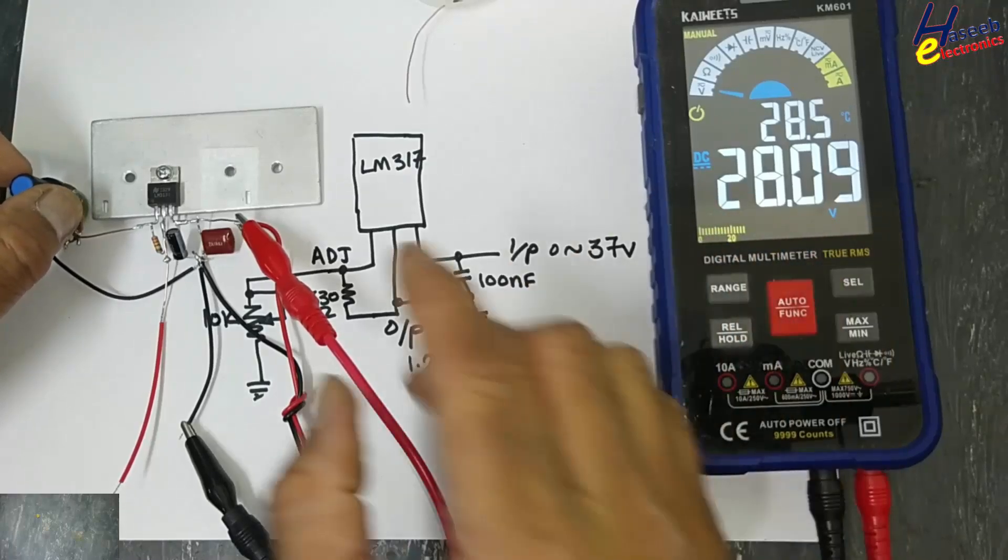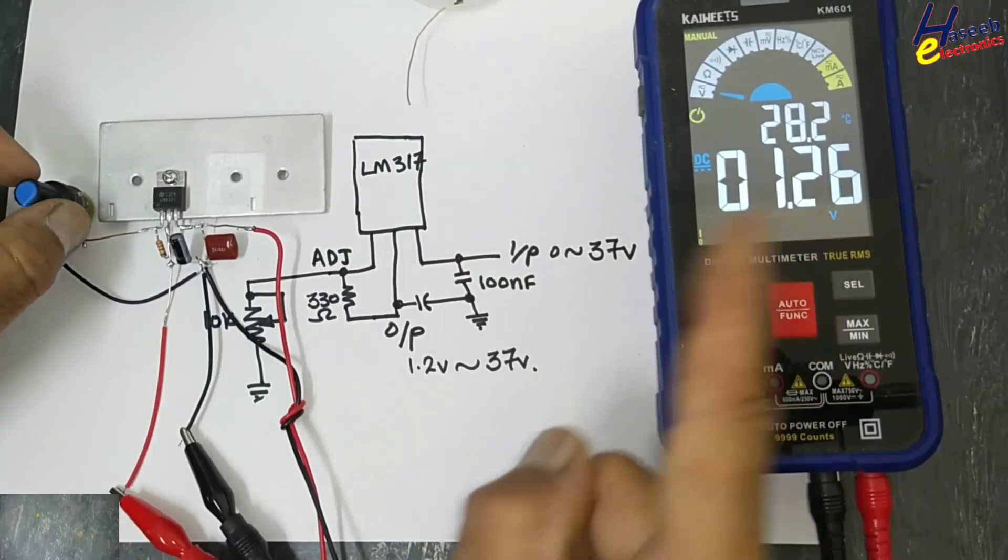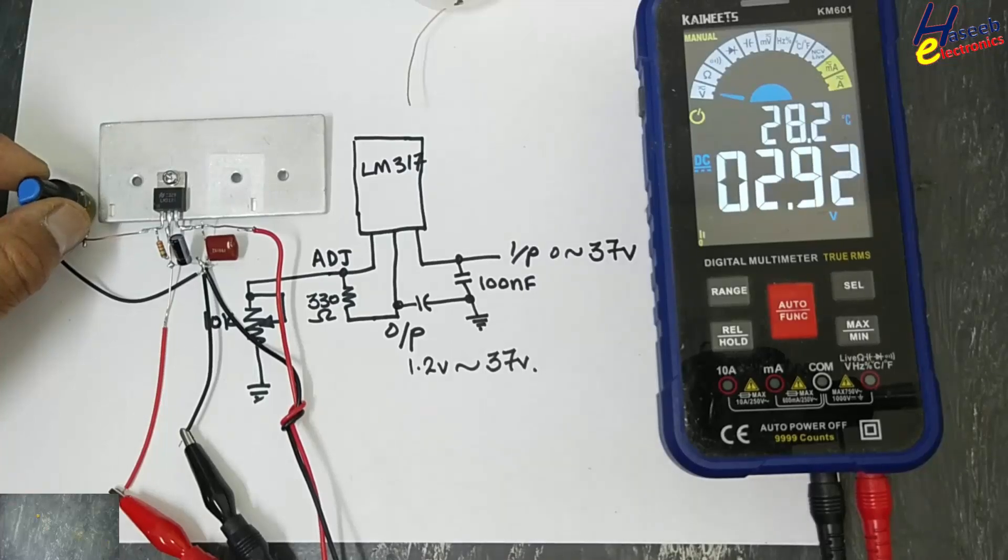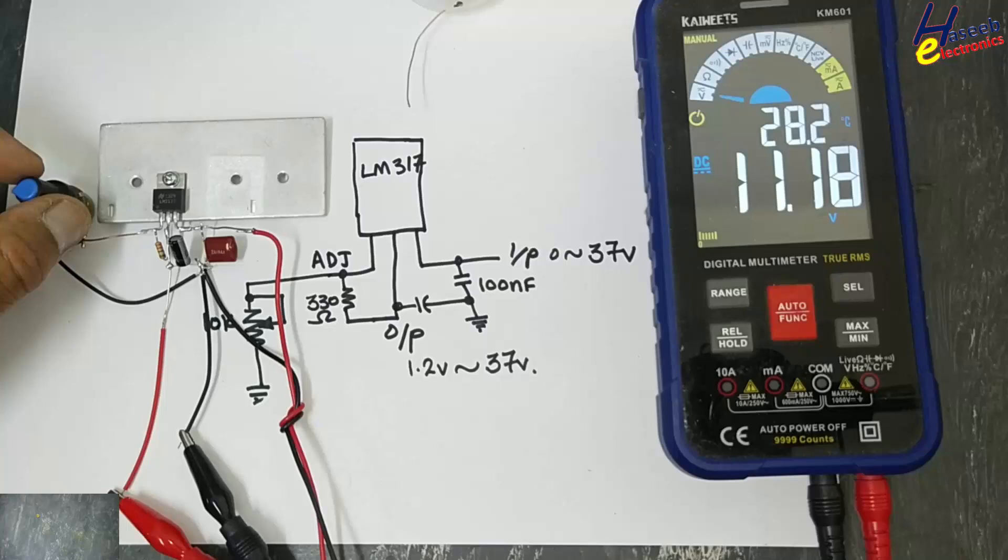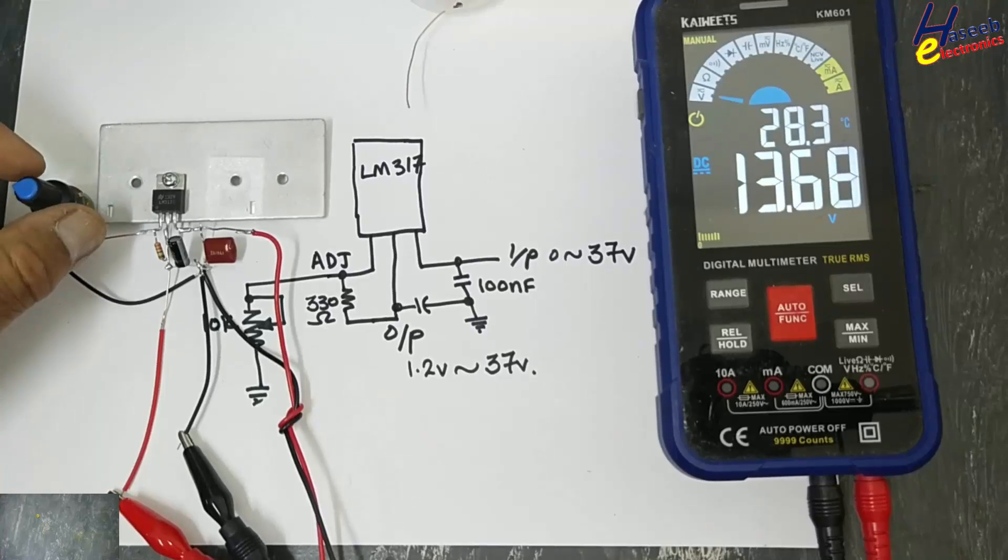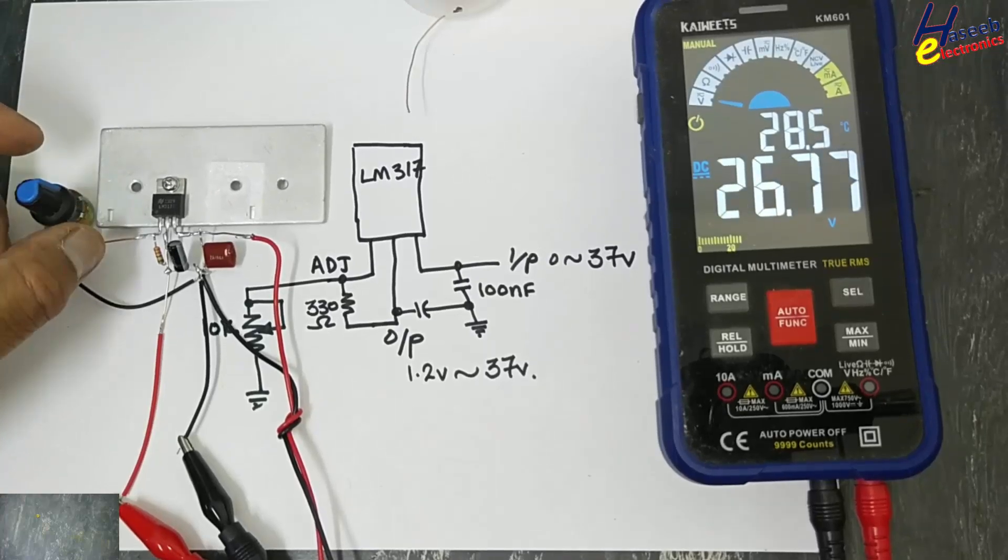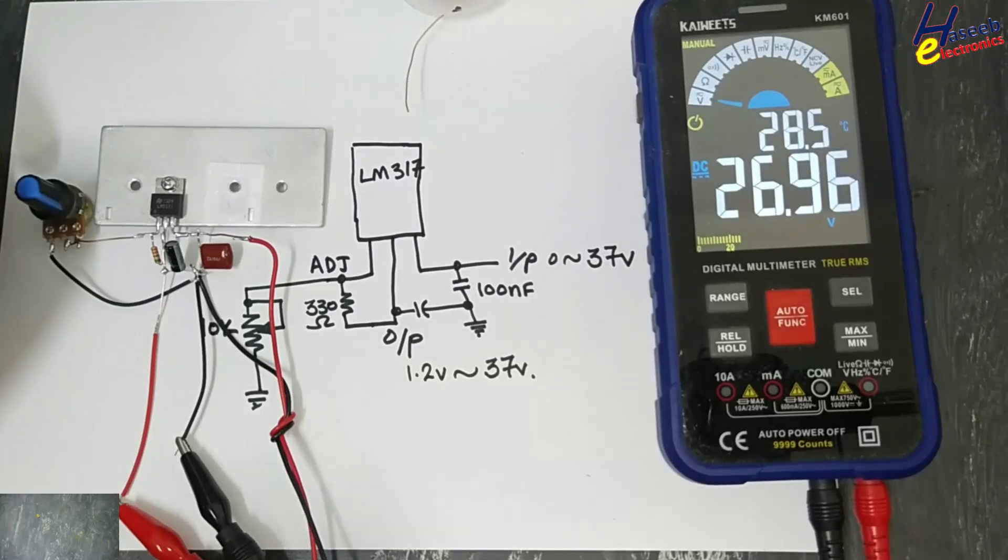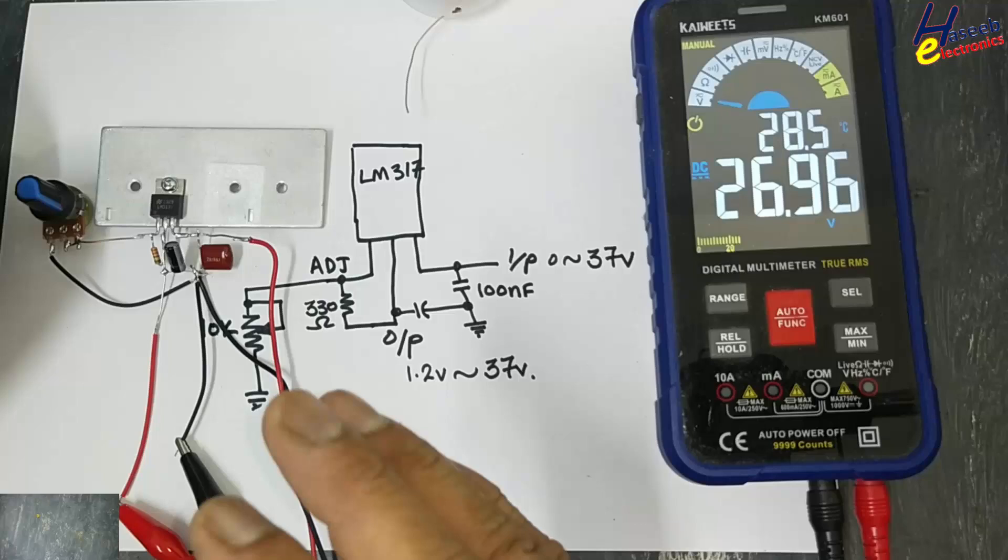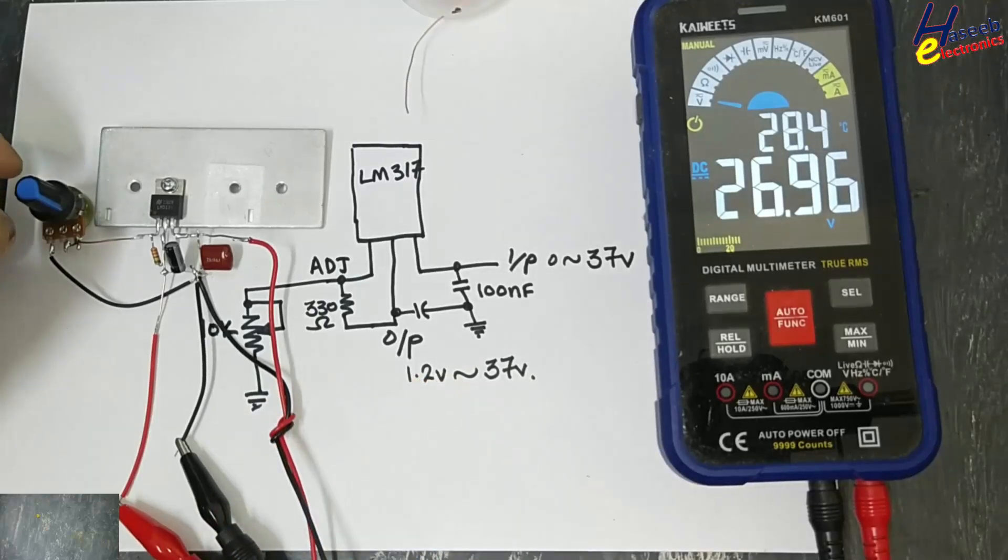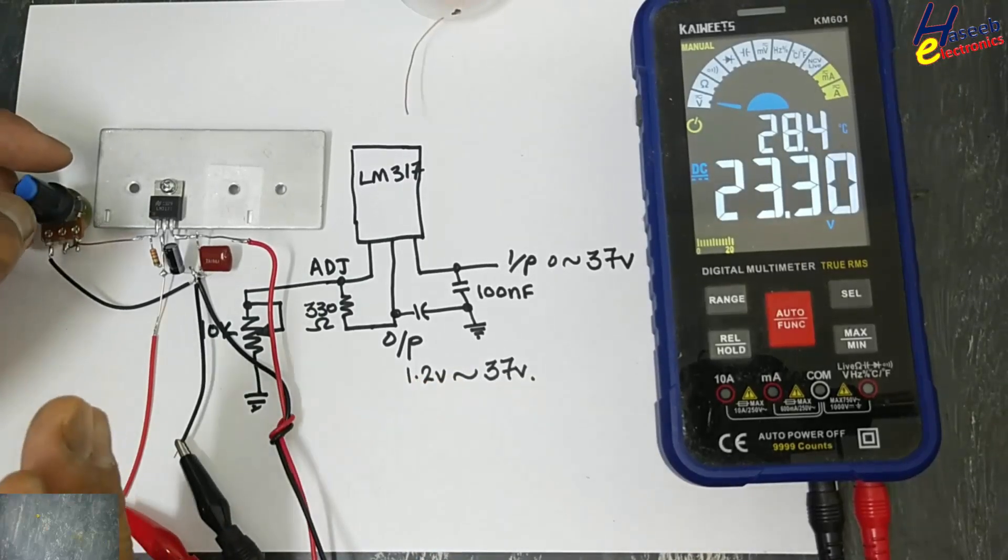Input 28.09 volts, minimum output 1.26 volts, 5.2 volts, 11.1 volts, 13.6 volts, 26.7 volts, and maximum output 26.96 volts with 1.5 ampere output. It is a linear regulator.